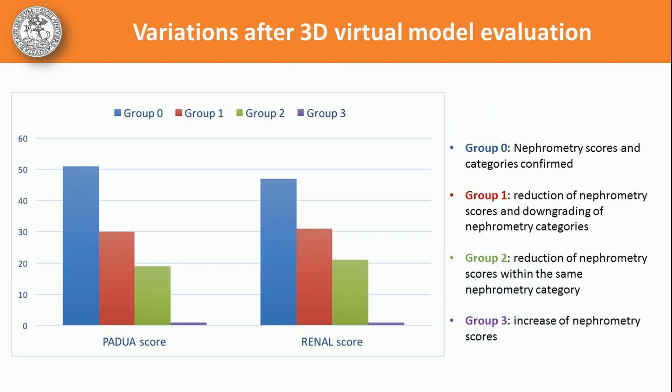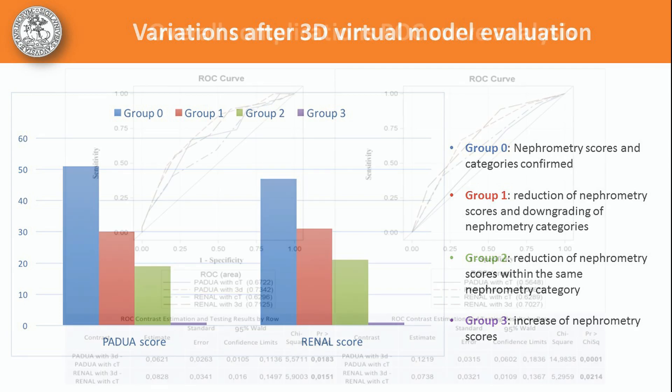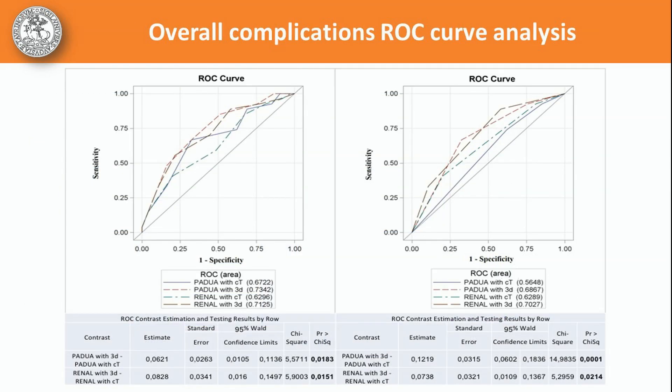In around 50% of the cases, the use of 3D virtual models led to a reduction of the PADWEN renal score. Focusing on the score categories, in 30% of the cases a downgrading was recorded. Considering the role of the nephrometry scores in predicting postoperative complications, the ROC curves showed significantly larger areas under the curve for the 3D nephrometry scores and categories compared to the corresponding 2D ones.